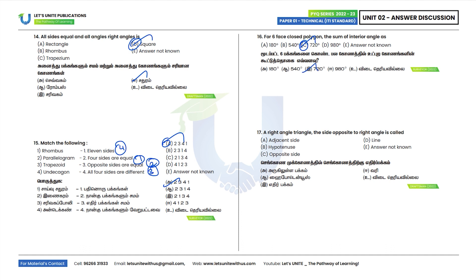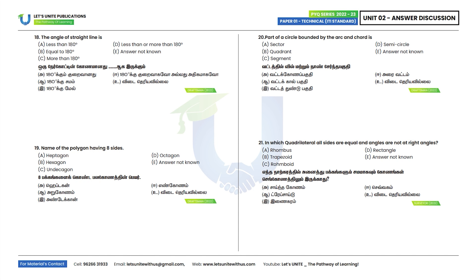Seventeenth question: In a right angle triangle, the side opposite to the right angle is the hypotenuse. Option B. Eighteenth question: The angle of a straight line is equal to 180 degrees. Option B. Nineteenth question: The name of the polygon having 8 sides is an octagon. Option D. For reference: heptagon has 7 sides, hexagon has 6 sides, and undecagon has 11 sides.